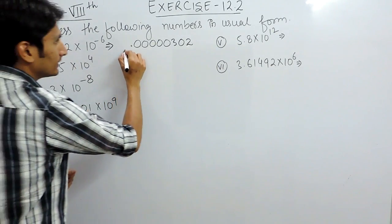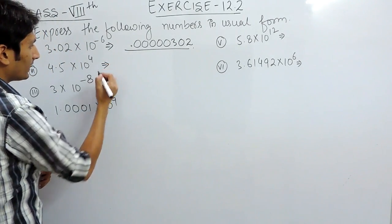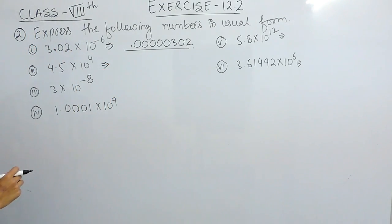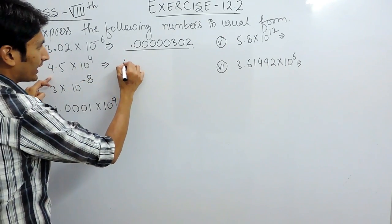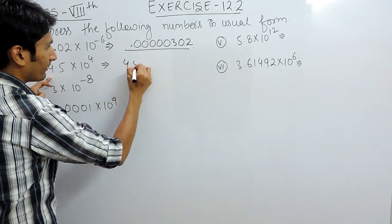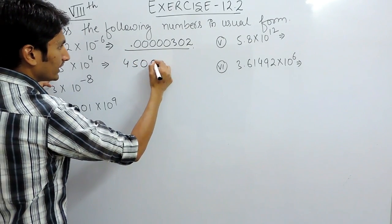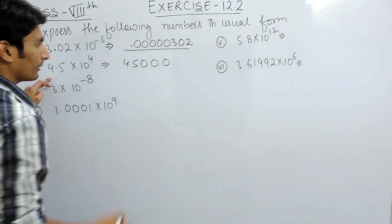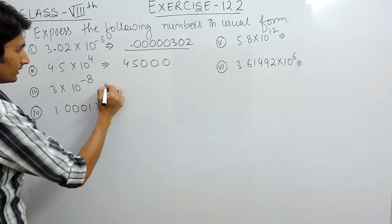In the second part, the power is positive, so you have to shift the decimal to the right-hand side till 4 digits. Counting: 1, 2, 3, 4 — the number would be 45 followed by zeros. So this should be the answer.